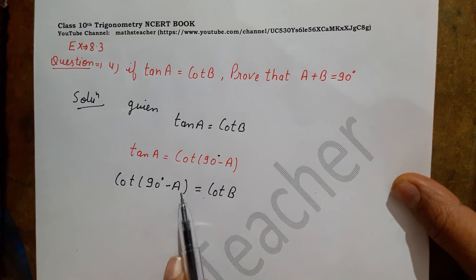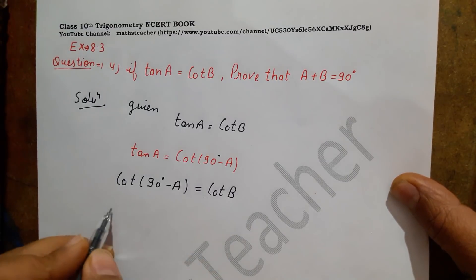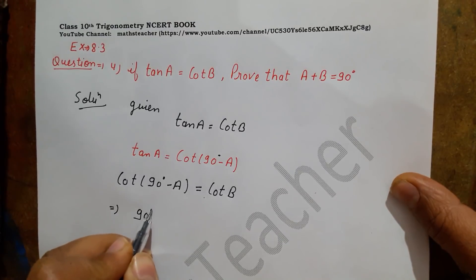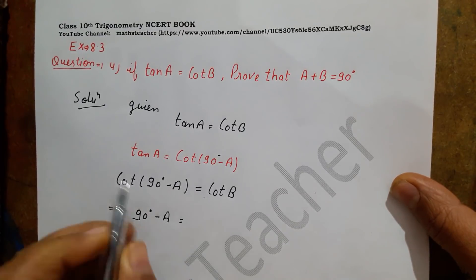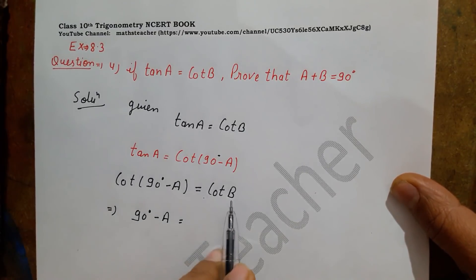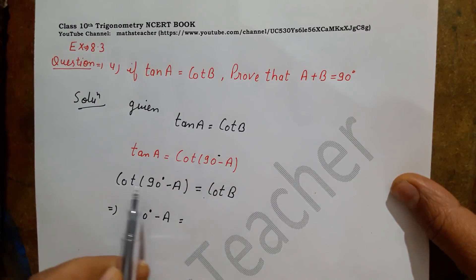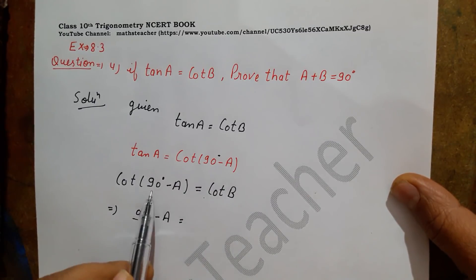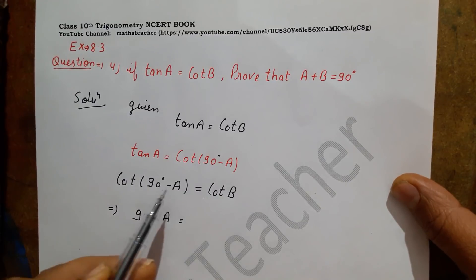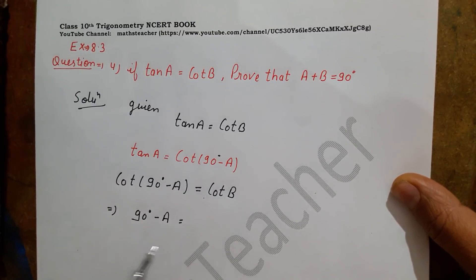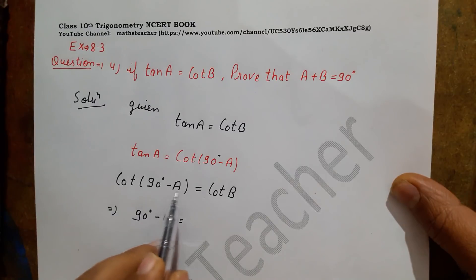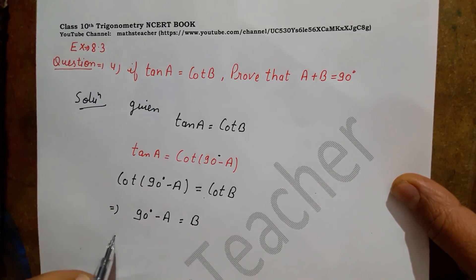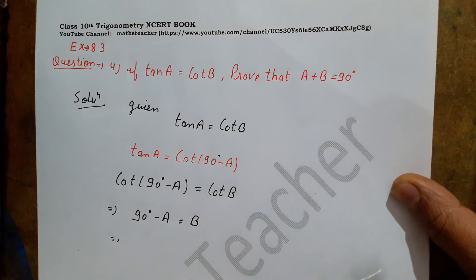Since both sides are equal and both are cot functions, we can compare the angles directly. Comparing them, we get: 90° minus A equals B.